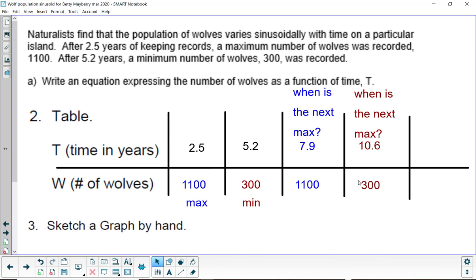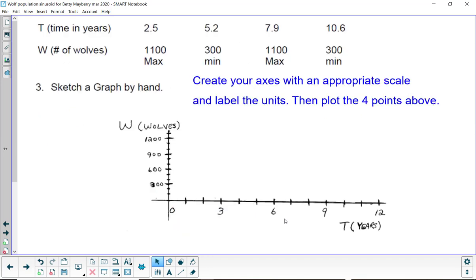Now that we have four ordered pairs, we should be able to make a sketch by hand. I'd like you to create your axes with an appropriate scale and label the units. And then plot the four points that we have above here. I used the vertical to be W, the number of wolves. I marked it off in 100s and then showed it every 300. And then years, I went from 0 to 12 in single years.